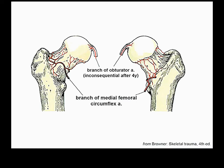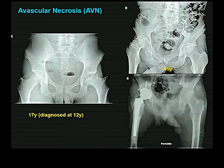If the blood supply is enough to keep it alive but not enough to allow healing, you get non-union. If you have non-union or avascular necrosis after internal fixation, you will have to re-operate, remove your screws, and replace the head of the femur with a metallic device.